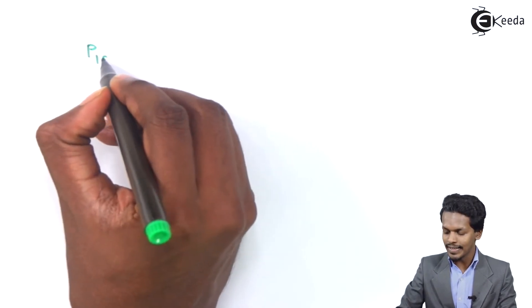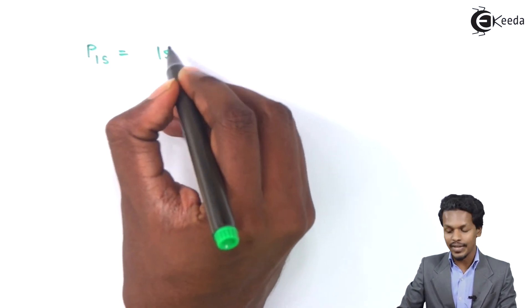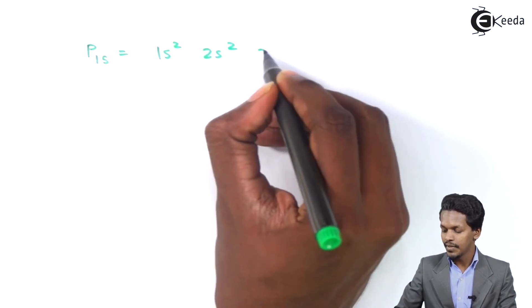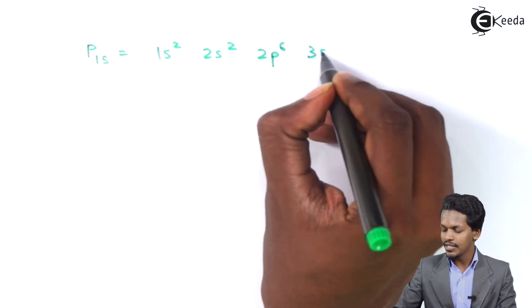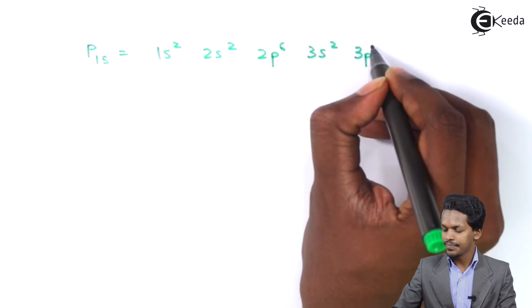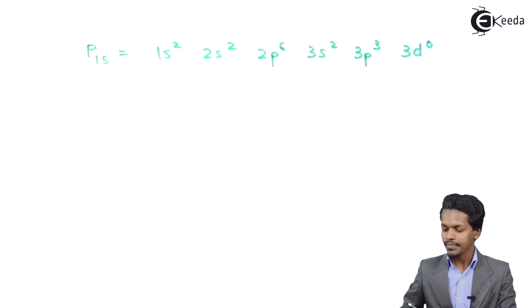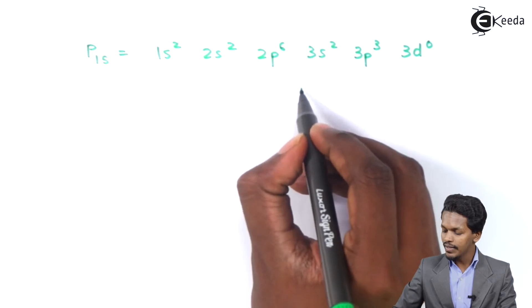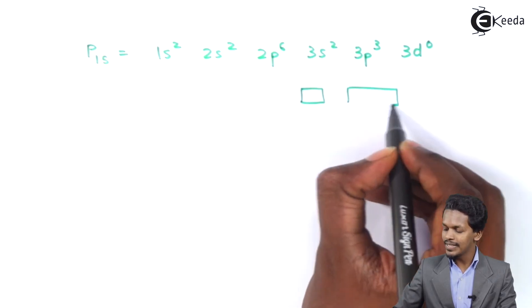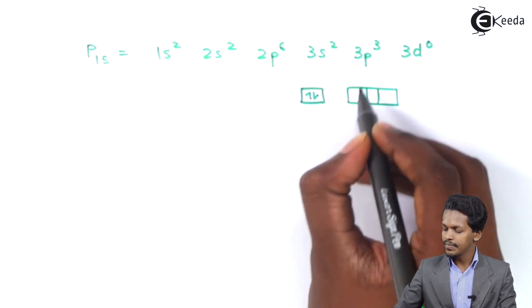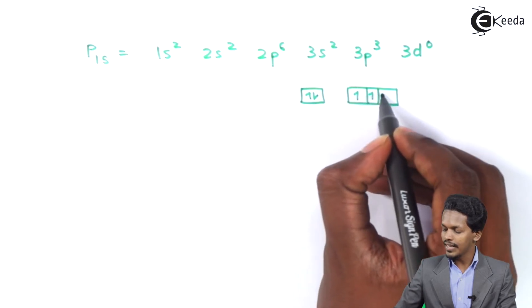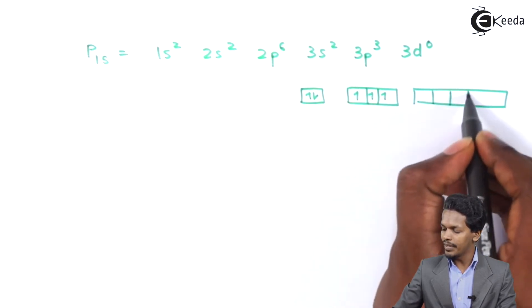Phosphorus has an electronic configuration that can be written as 1s², 2s², 2p⁶, 3s², 3p³, or we can write 3d⁰. If we observe, the s orbital consists of 2 electrons, the p orbital consists of 3 electrons, and there are no electrons in the d orbital.